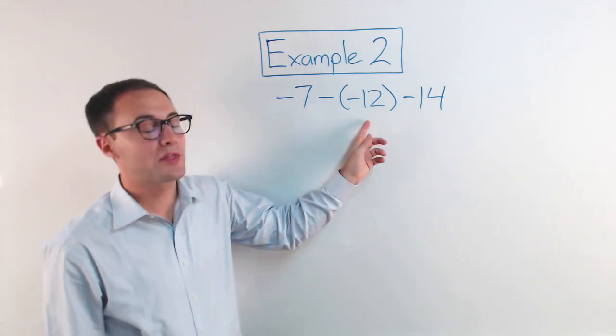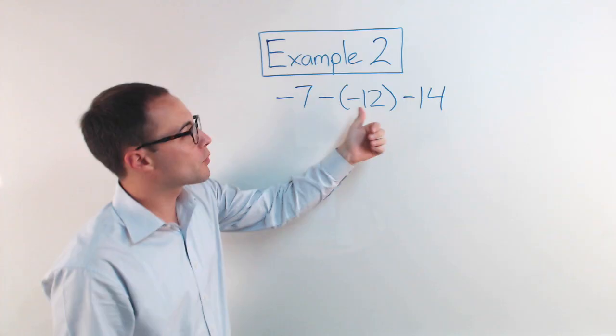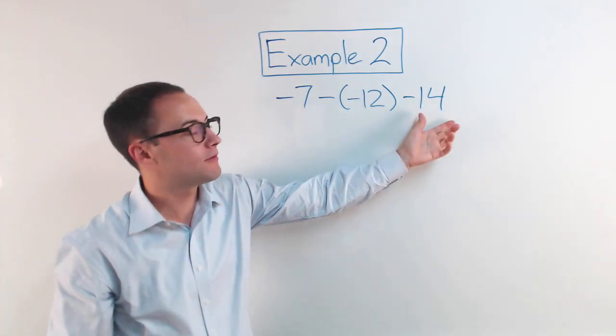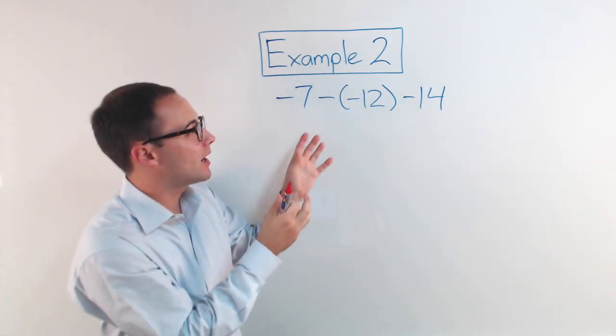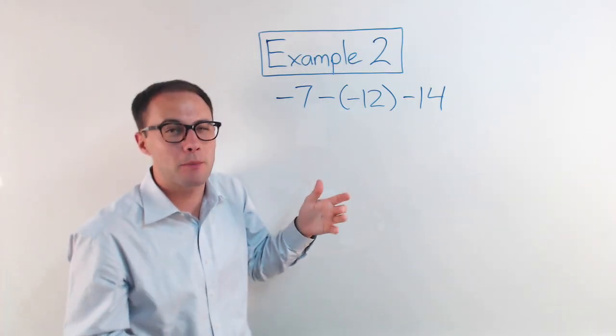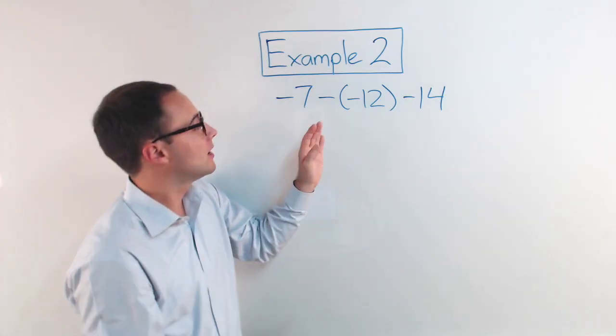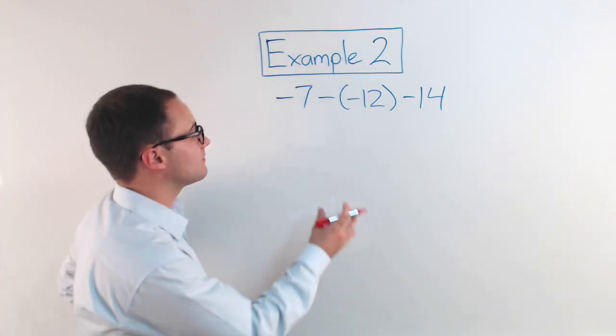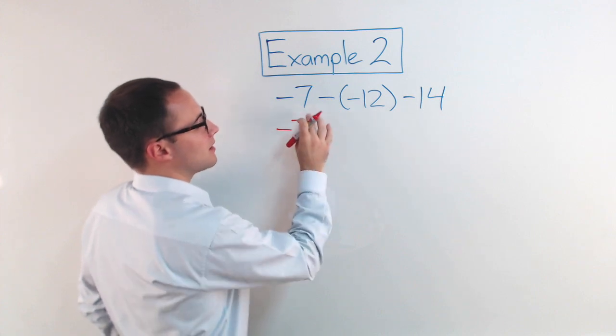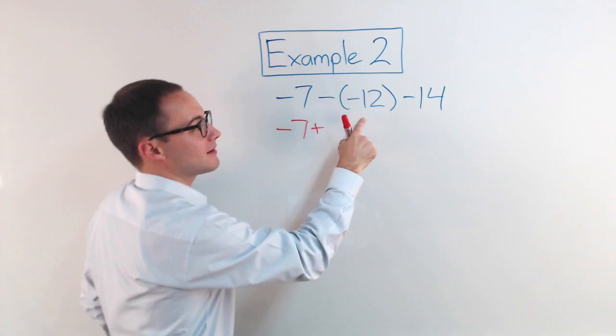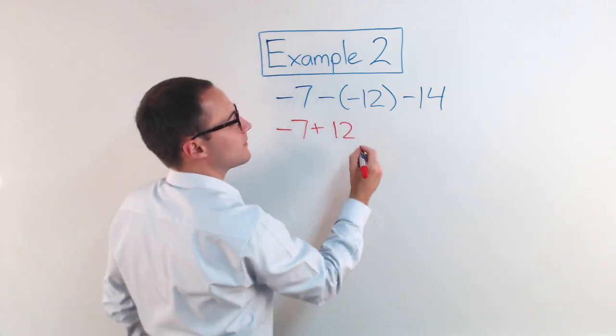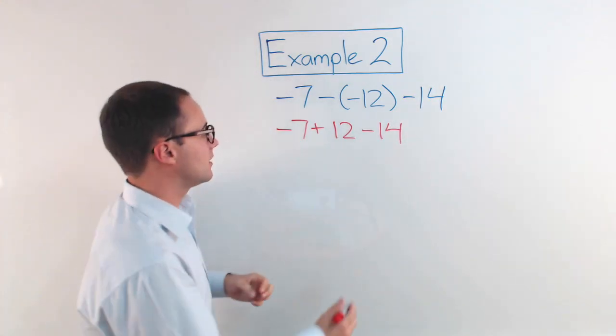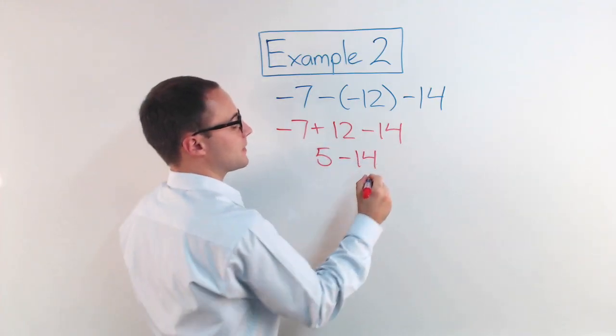Example 2. Notice we've got 3 integers this time instead of just 2. Remember, we're subtracting. I can't just rearrange. I can't put the negative 7 over here and combine it with the negative 14. Because it's not an addition problem or a multiplication problem. The commutative property doesn't apply at this point. So, I'm just going to go left to right. So, negative 7 minus negative 12. Subtracting the integer. I'm going to change it to an addition. So, negative 7 stays the same. Subtracting the integer is the same as adding its opposite. The opposite of negative 12 is 12. Still going to have that minus 14 there. So, this is simple. Negative 7 plus 12. That's going to give me 5. And then I have 5 minus 14.